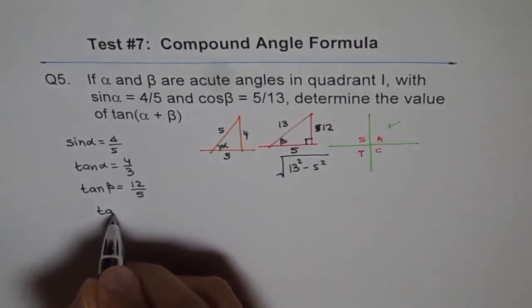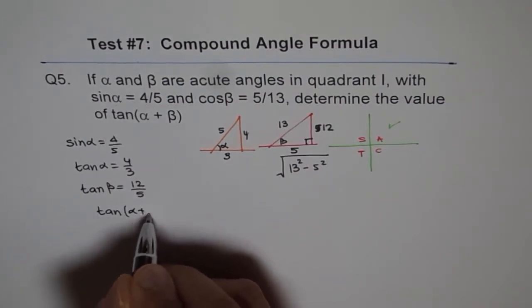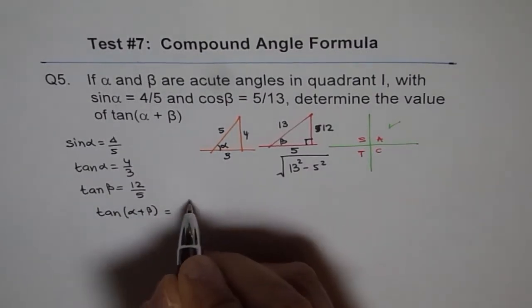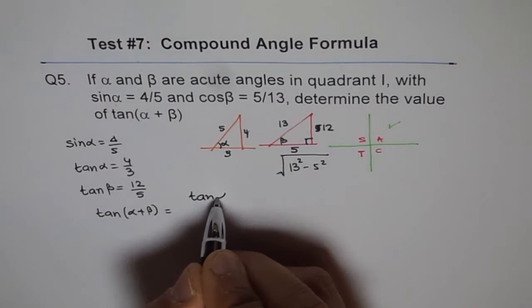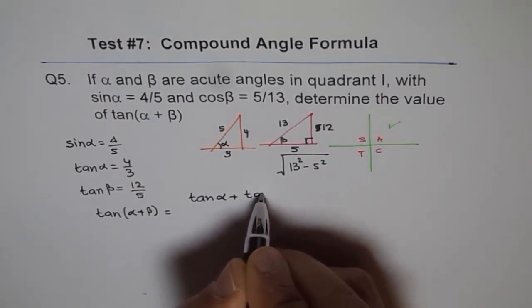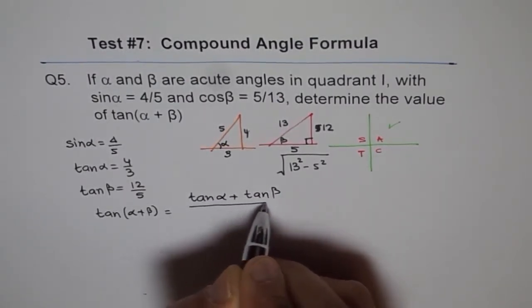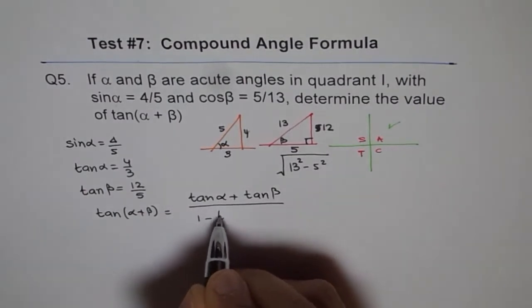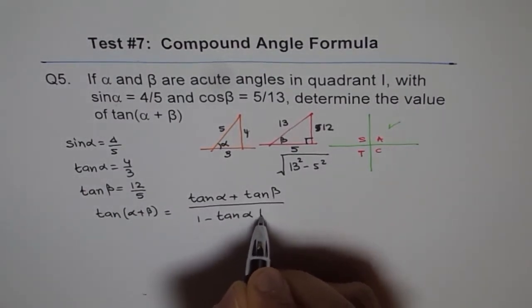And what is tan of α plus β? You know your compound angle formula. You can write that. So it's tan α plus tan β over 1 minus tan α tan β.